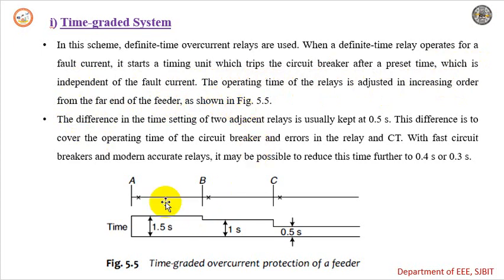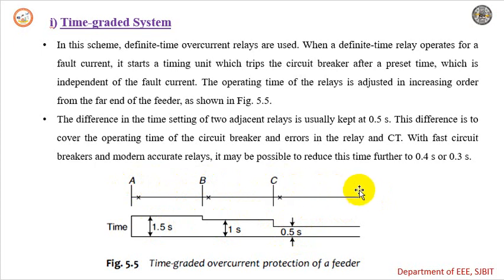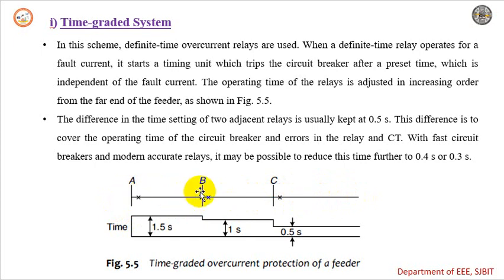As shown in the figure, the operating time for the section beyond C is 0.5 seconds, between sections B and C it is 1 second, and between sections A and B it is 1.5 seconds. If a fault occurs beyond C, the fault current will flow through relay A and relay B. The relay at C should trip for ideal operation.